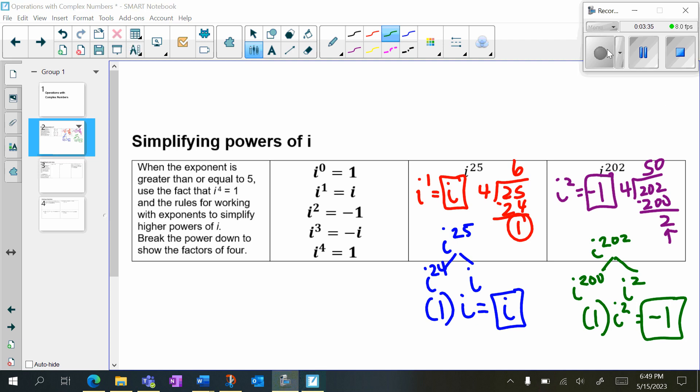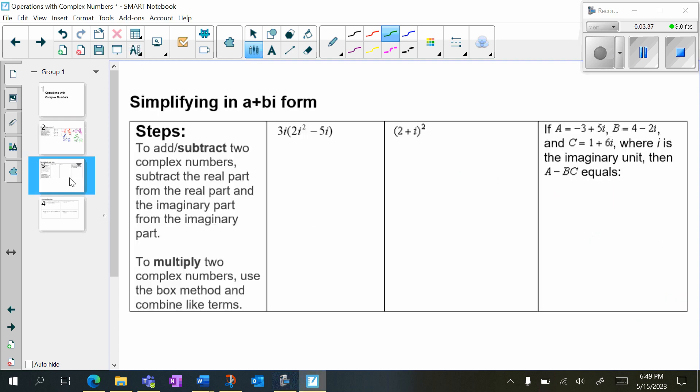Now, let's move on to simplifying in a plus bi form. Steps: To add or subtract two complex numbers, we're going to subtract the real part from the real part and the imaginary part from the imaginary part. To multiply two complex numbers, we're going to use the box method and combine like terms. Now, we're used to using our calculator to do this. But again, now that we're in pre-calculus, we're using the calculator much less frequently. So we want to do this by hand.